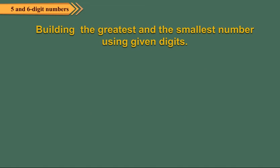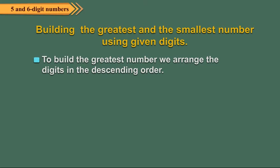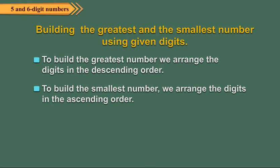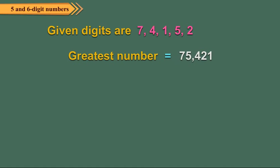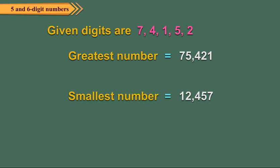Let us discuss how to build the greatest and the smallest number using some given digits. To build the greatest number, we arrange the digits in descending order. To build the smallest number, we arrange the digits in ascending order. Using digits 7, 4, 1, 5 and 2: arranging in descending order gives the greatest number 75421, and arranging in ascending order gives the smallest number 12457.